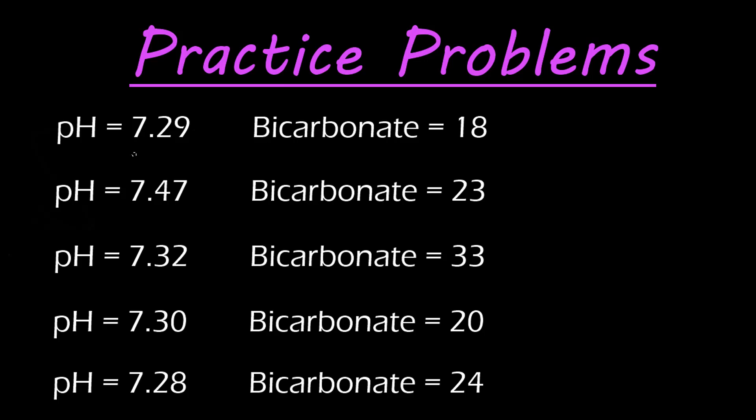The only two things you need from the ABG values are pH and bicarbonate. Here we have our pH value. This is below our normal range of 7.35 to 7.45, so we're going to draw a down arrow there. Bicarbonate normal values are 22 to 26. This is below that.